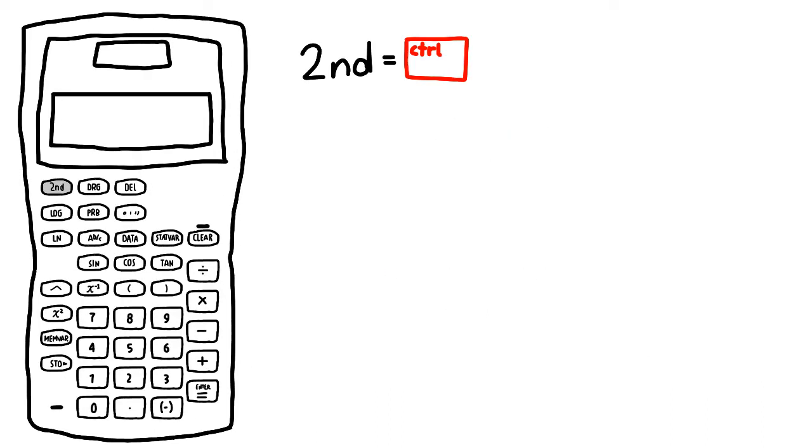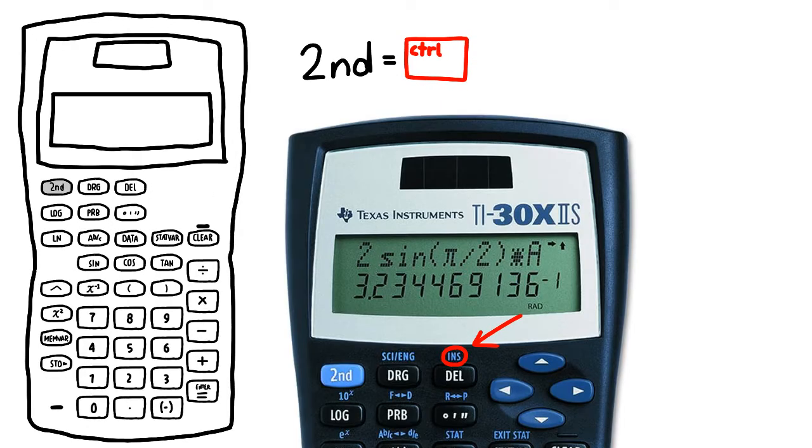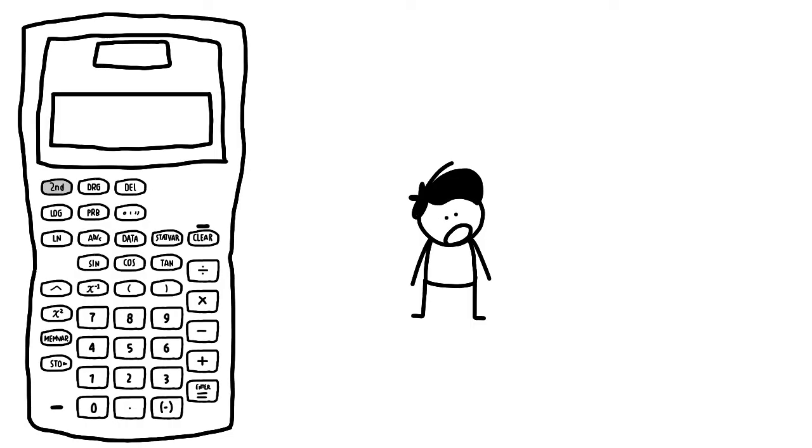The second button is like a control key on a computer. You press it, and then all the other buttons do what the blue text above the button says. I am not going to cover what all this means, because I don't want to. I'll link the official manual in the description.